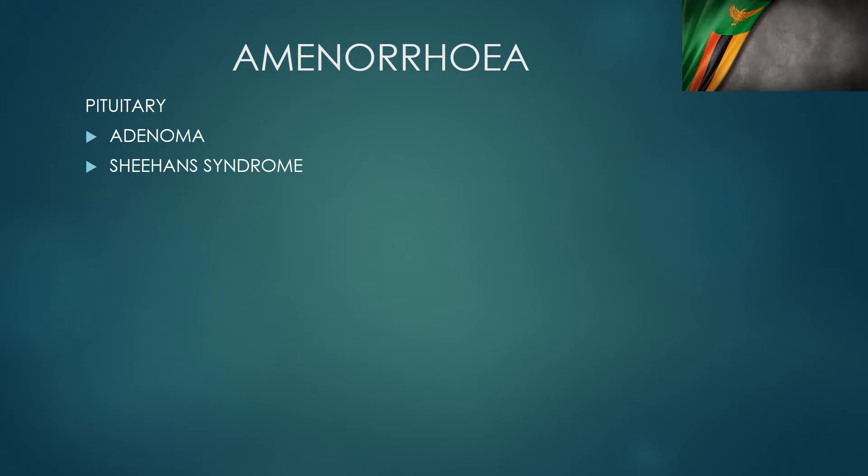Secondary amenorrhea can also be due to pituitary gland problems. Somebody has a malfunctioning pituitary gland, maybe because there's an adenoma there — a tumor that has destroyed the glands that produce FSH (follicle-stimulating hormone) and destroyed the glands that produce luteinizing hormone. Sometimes there's an adenoma or a tumor that is producing prolactin, what is otherwise called a prolactinoma, and therefore that is suppressing the production of follicle-stimulating hormone and luteinizing hormone, leading to lack of menses.